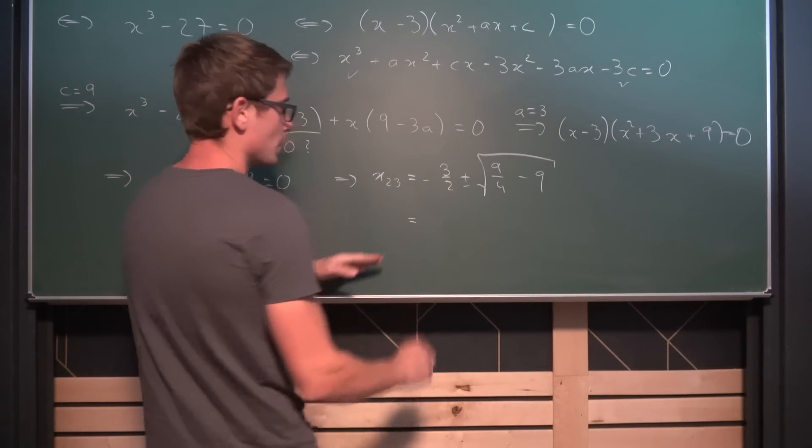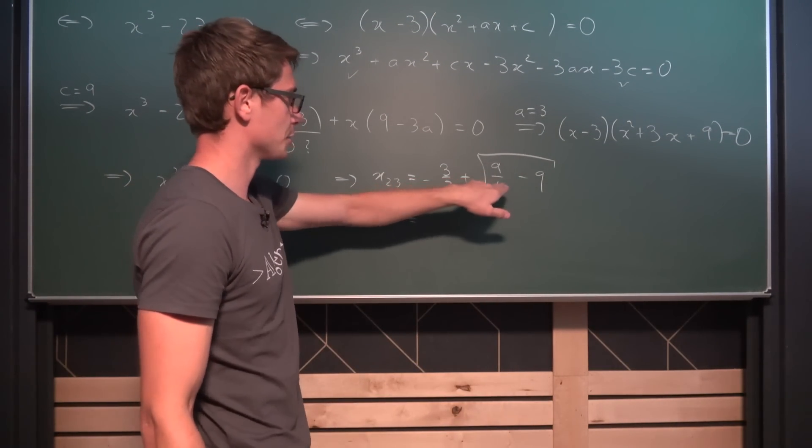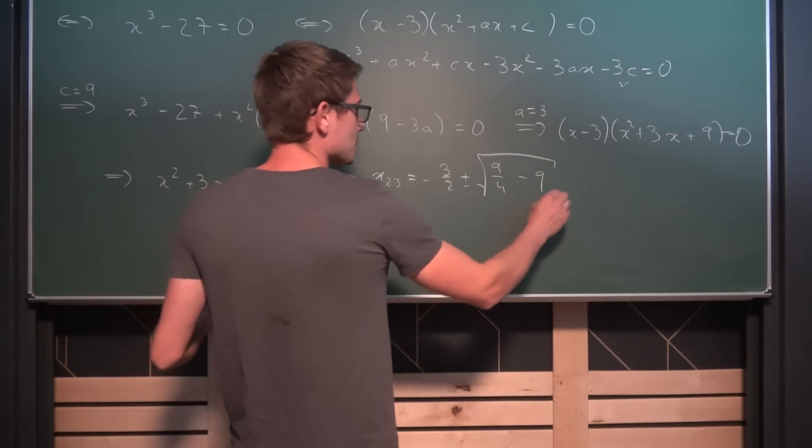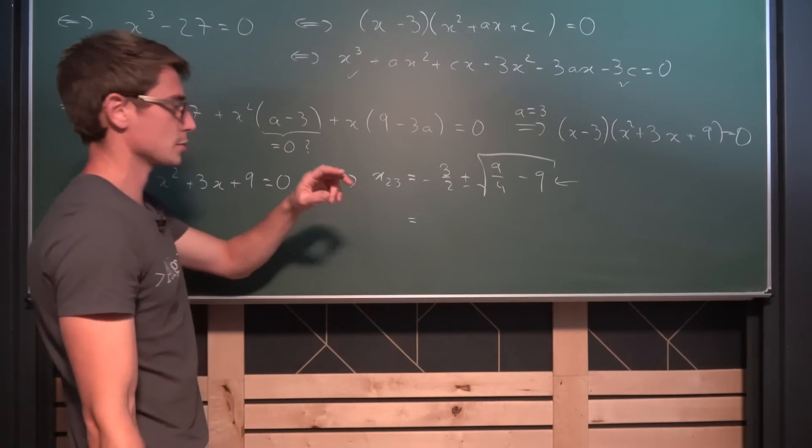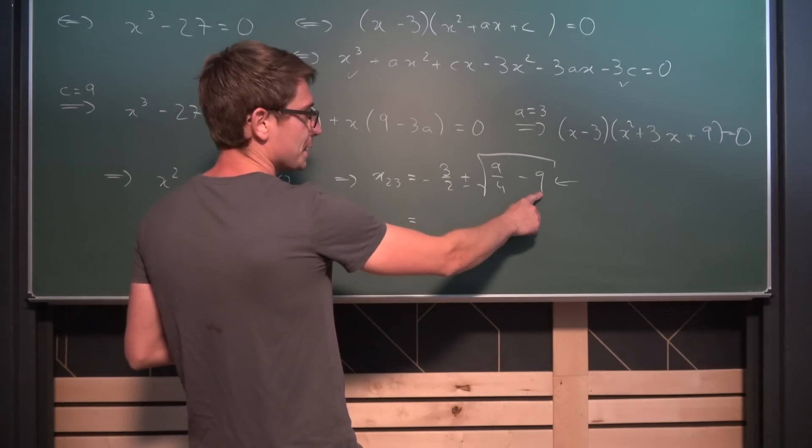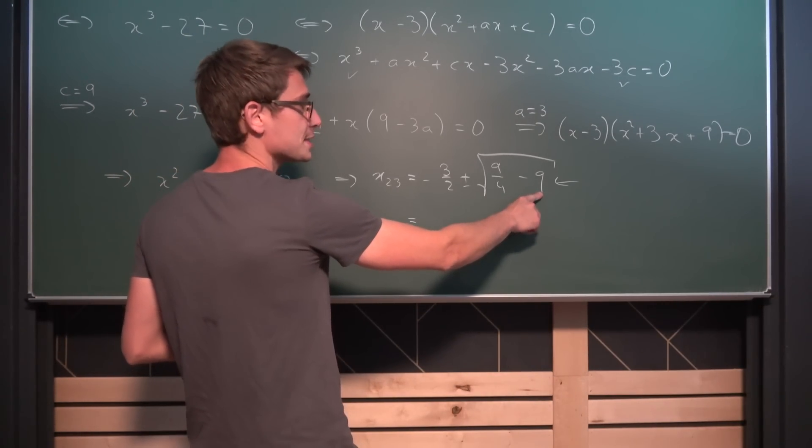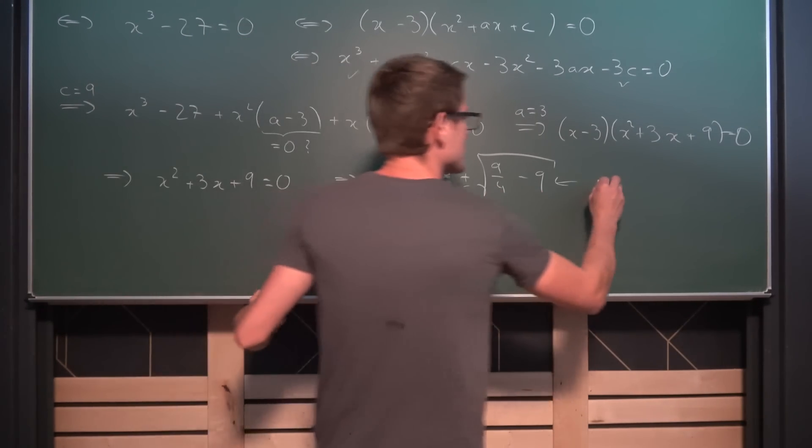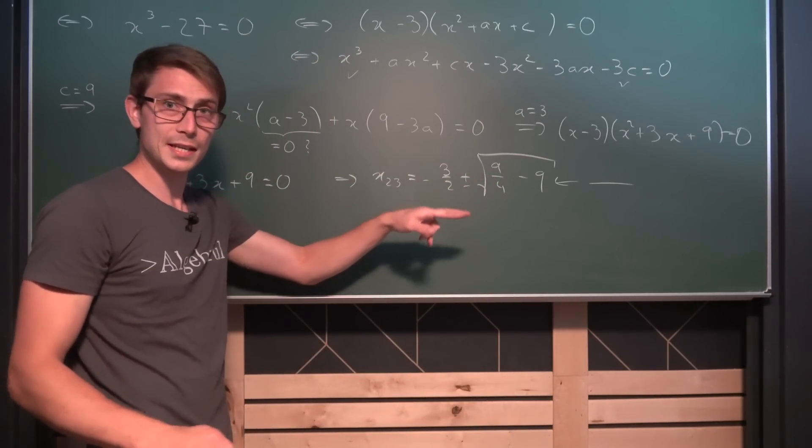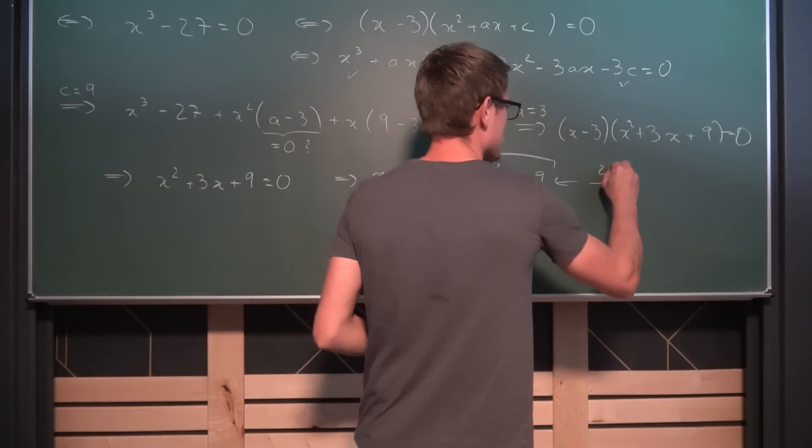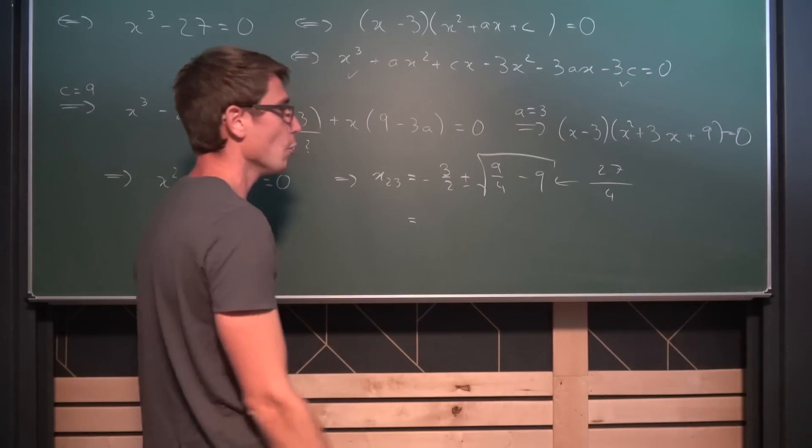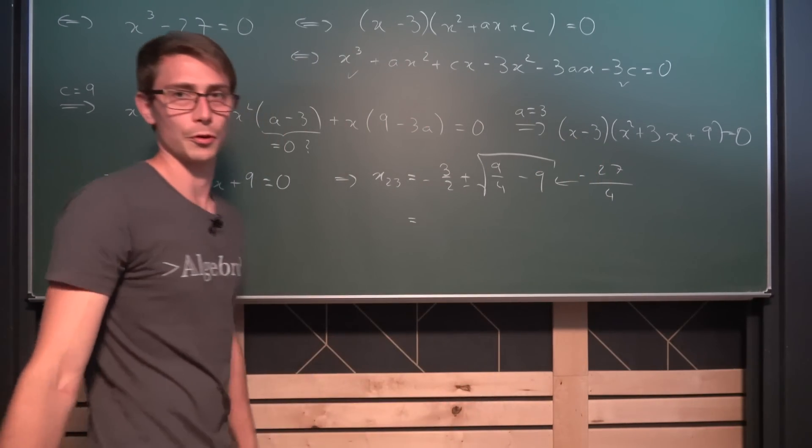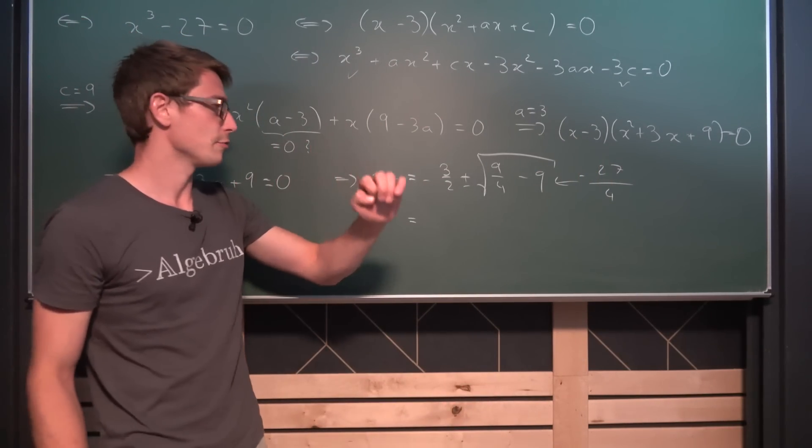What we are going to do is we are going to bring the discriminant together and see what we are going to get. This part right here under the root, the discriminant, is going to be by expanding this by 4 before, gives us 36 over 4. So we have 9 minus 36 is going to give us 27 over 4, but with a negative sign at the front obviously because we have 9 minus 36.